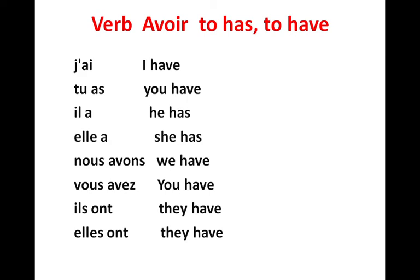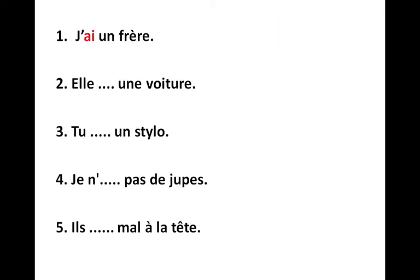Let's start our exercises. First: 'je ___ un frère' — I have a brother. How do we conjugate avoir with 'je'? We write 'ai', so it becomes 'j'ai un frère'. Next: 'elle ___ une voiture' — she has a car. With 'elle' we write 'a'.